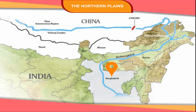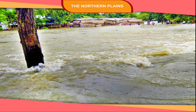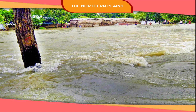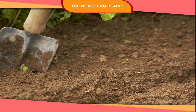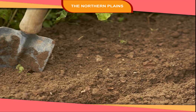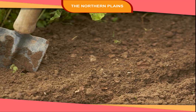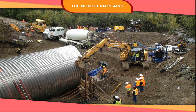The Brahmaputra Basin covers the north-eastern part of India. This region gets very heavy rainfall, and the river Brahmaputra overflows and causes floods. This river basin is very fertile, so it is also called the Food Bowl of India. This basin is also rich in minerals.